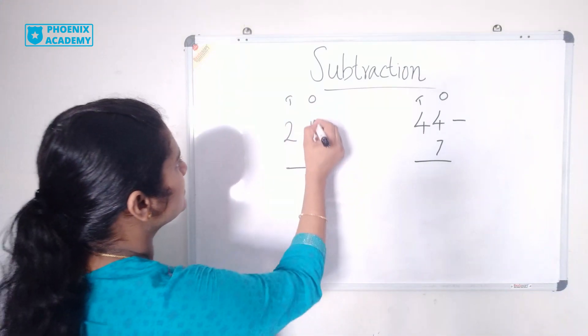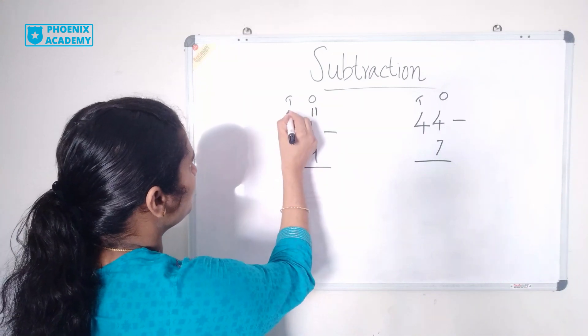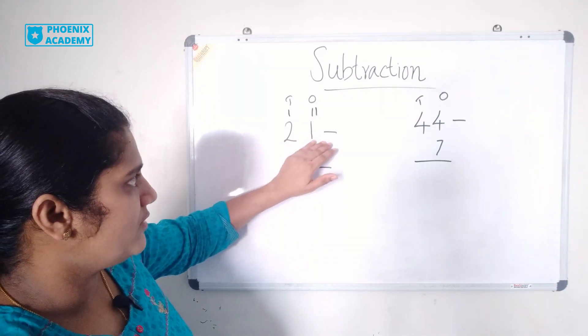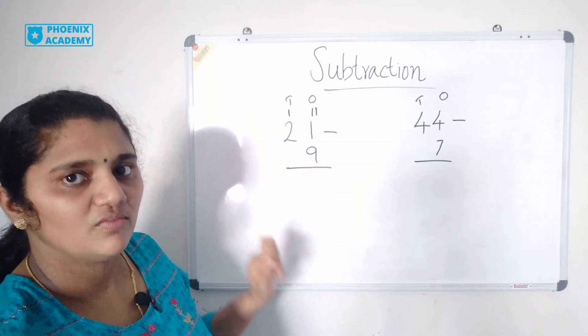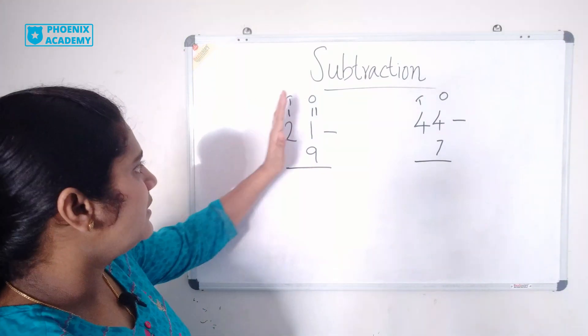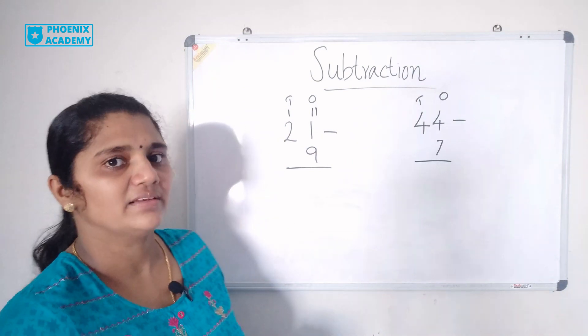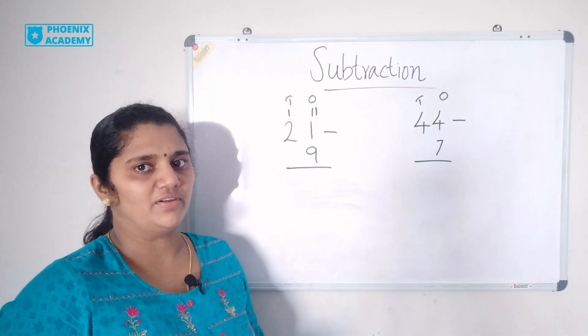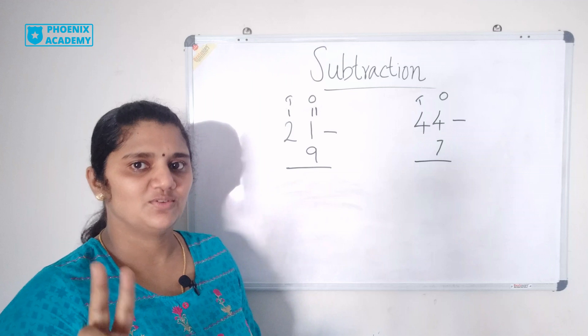So we borrow 1 tens from tens value. So this 1 becomes 11 and 2 becomes 1. We will regroup 21 into 1 tens and 11 ones. Now we can subtract 9 from 11. How do you subtract 9 from 11? We can count from 9 till 11. 10, 11. So 11 minus 9 is 2.